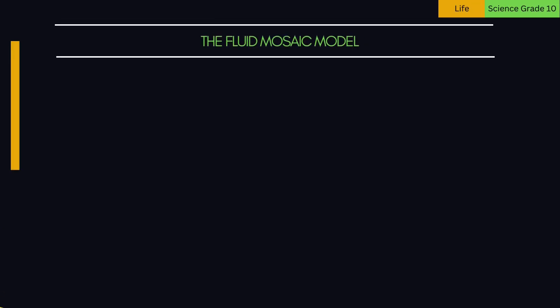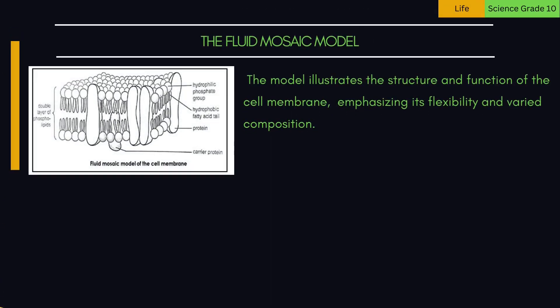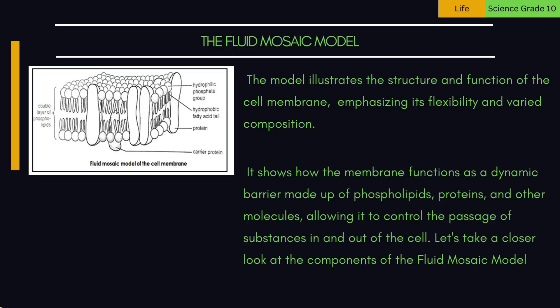The fluid mosaic model, as illustrated in the diagram, depicts the cell membrane as a flexible, dynamic structure composed of a phospholipid bilayer, hydrophilic heads, hydrophobic tails, proteins, and carrier proteins. The model illustrates the structure and function of the cell membrane, emphasizing its flexibility and varied composition. It shows how the membrane functions as a dynamic barrier made up of phospholipids, proteins, and other molecules, allowing it to control the passage of substances in and out of the cell.